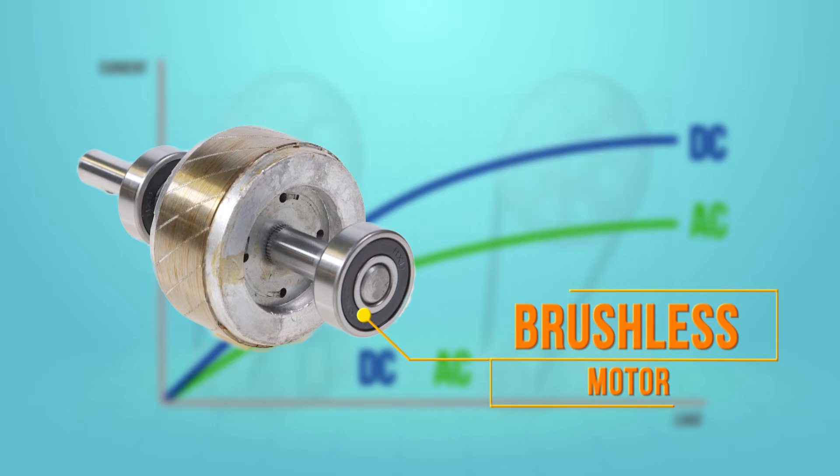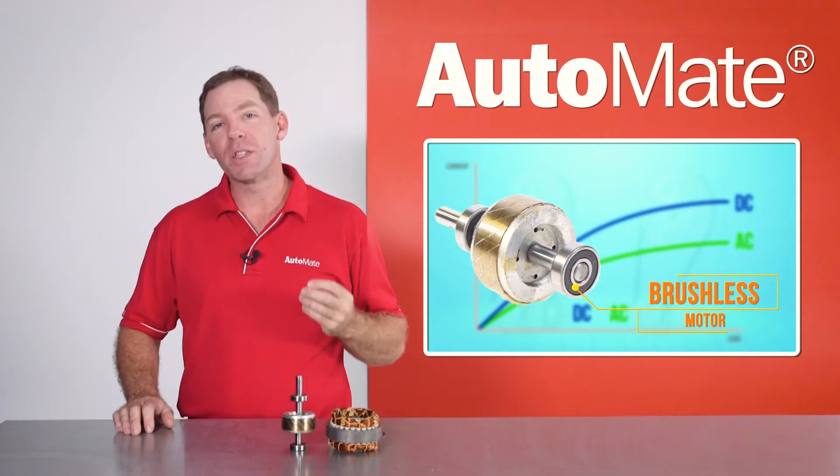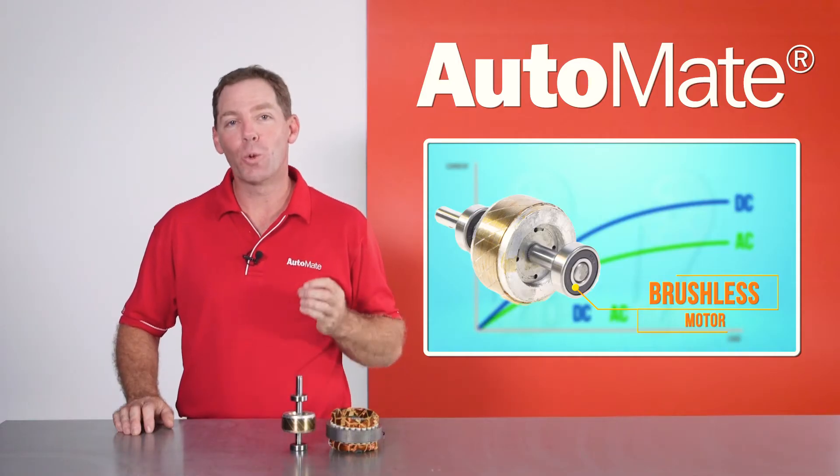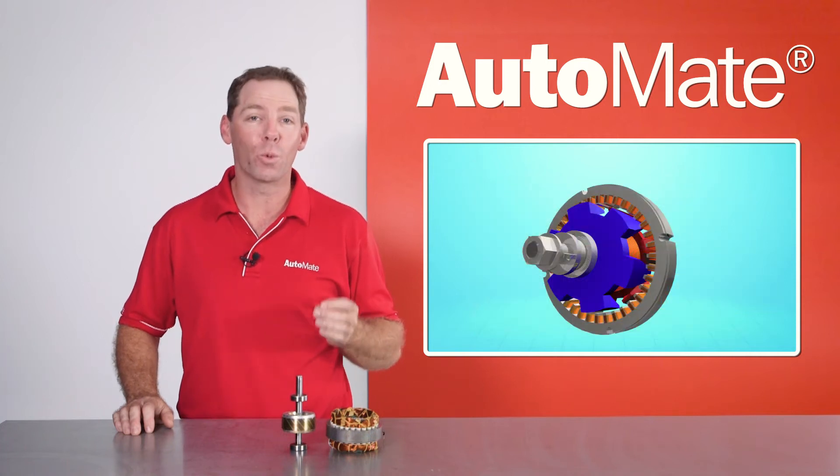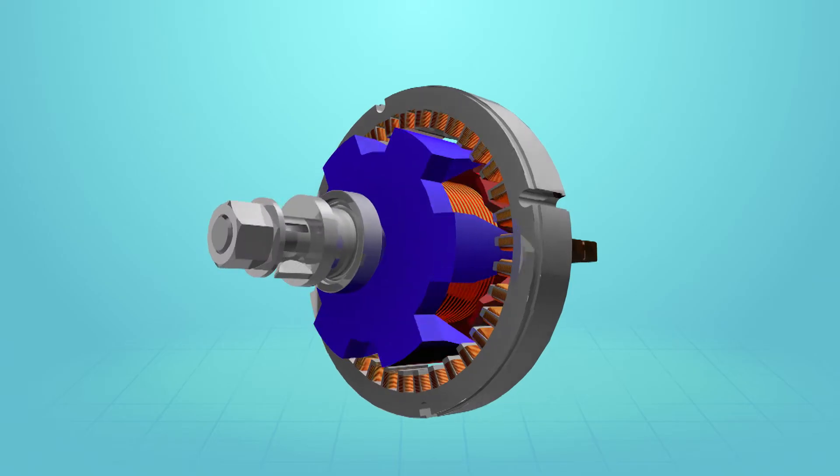They don't suffer from DC arcing, so they're cheaper to build and more reliable in design. Before we get started on AC motors, let's quickly look at how alternating current works in a circuit.